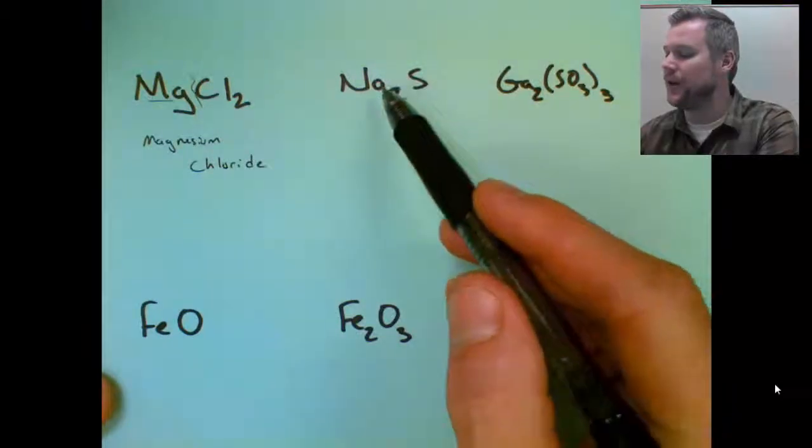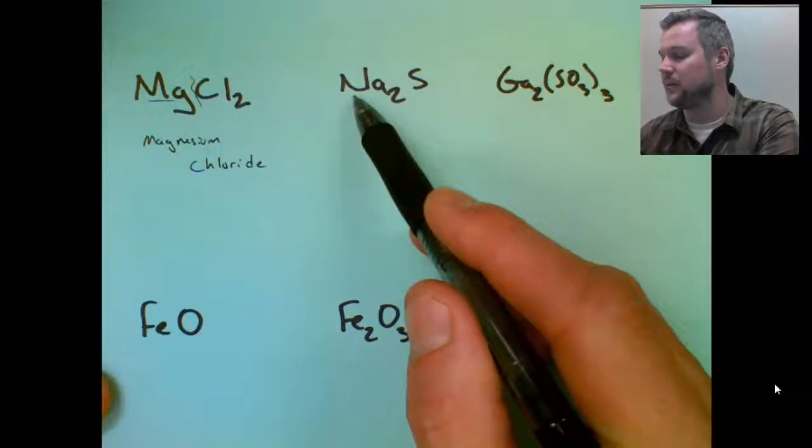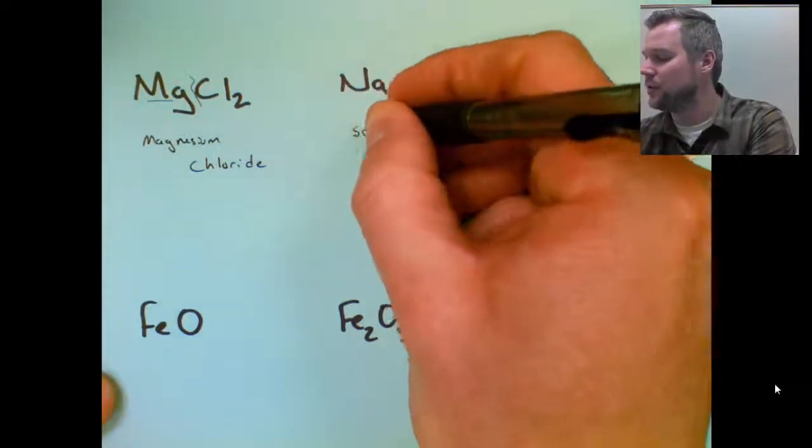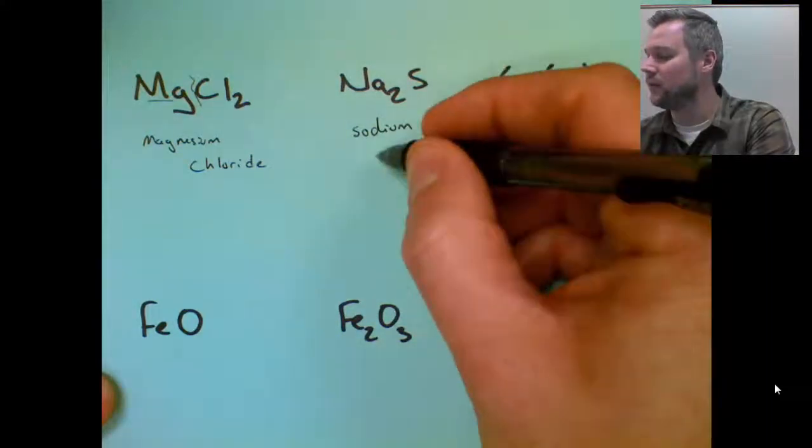Second compound doesn't start with hydrogen, therefore not an acid, not three more atoms. First atom is a metal, so this is ionic. Sodium doesn't take Roman numerals, so it's just called sodium. Name the first ion, name the second ion. S is called sulfide.